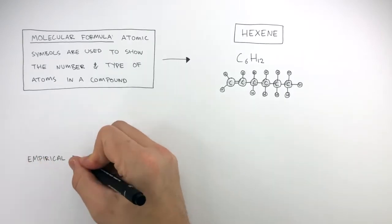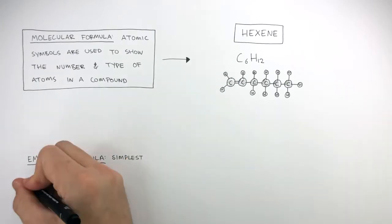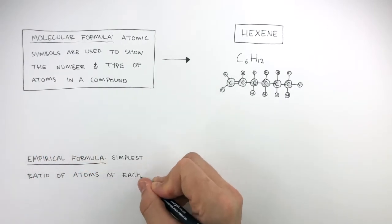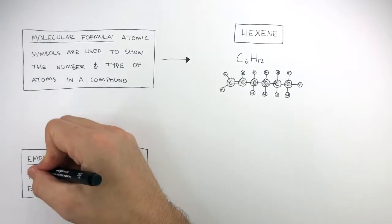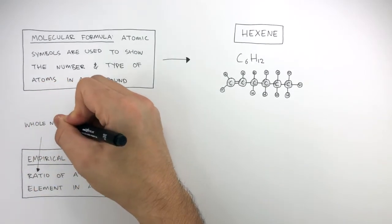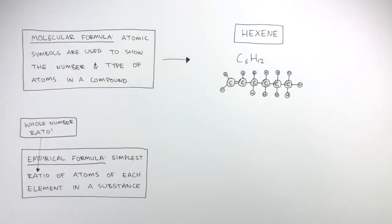Empirical formula is the simplest ratio of atoms of each element in a substance, and it must be a whole number ratio. Decimal places are not allowed.